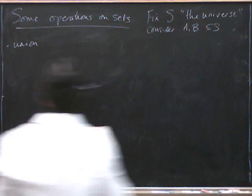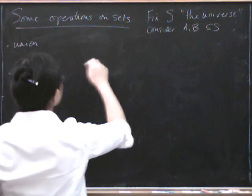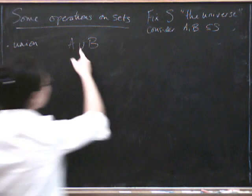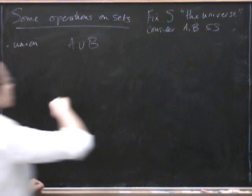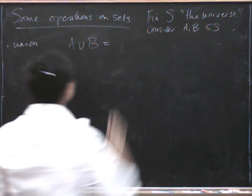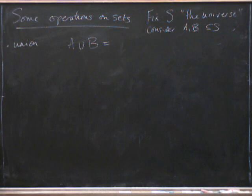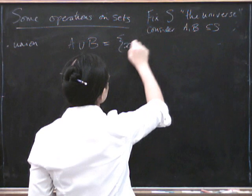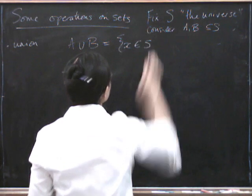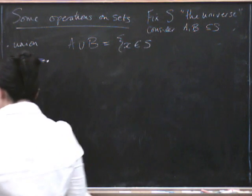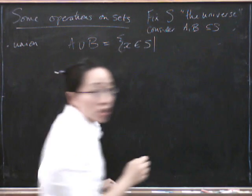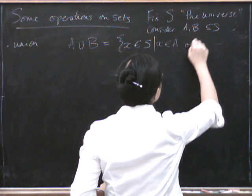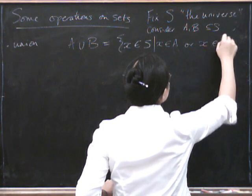But if we consider two subsets of this universe, then we can do the following things. We can take the union, or actually leave a bit of a gap maybe, which is written with a little U shape in a cup shape. And so that's all the things that are in A together with all the things that are in B. So if we write this out formally, it's all the X's in the universe such that, remember that vertical line means such that, such that X is in A or X is in B.